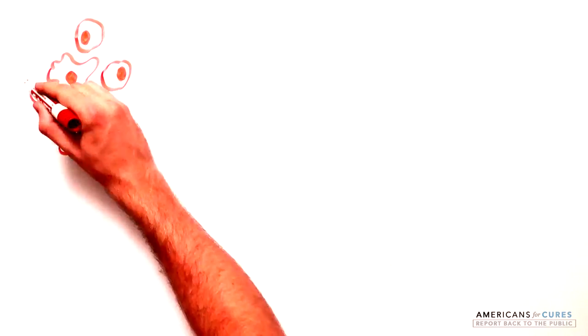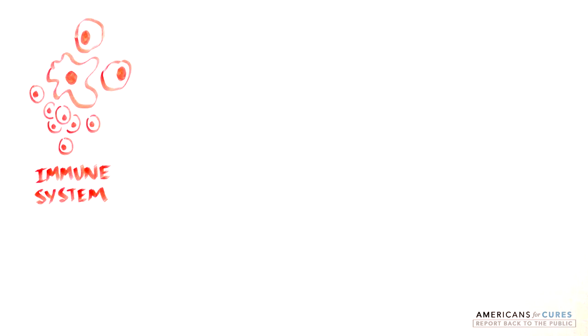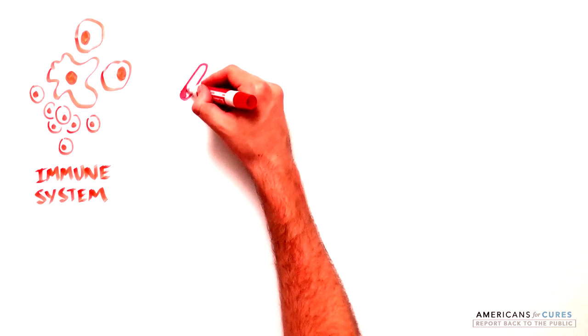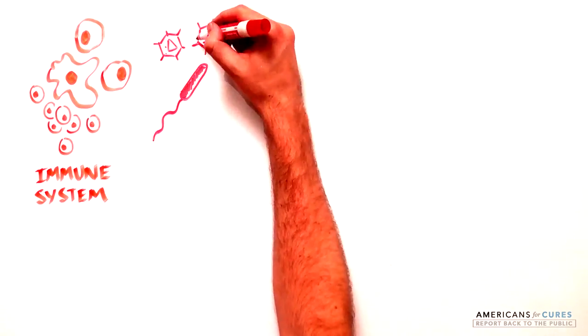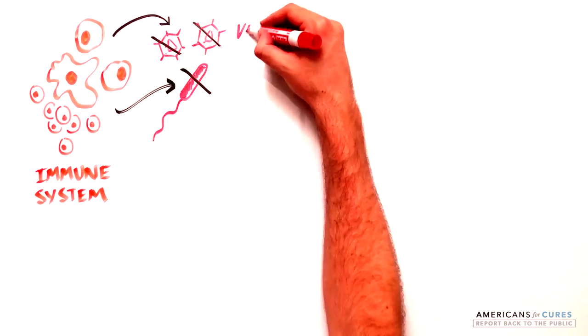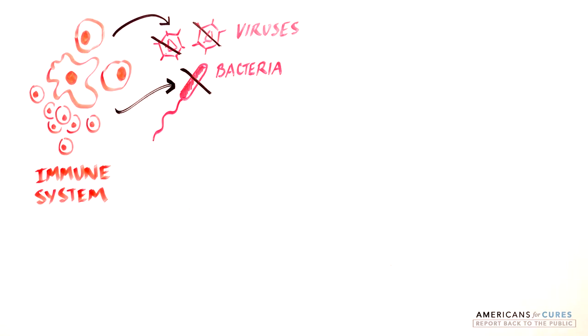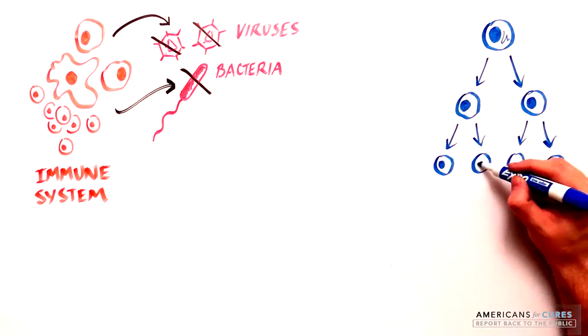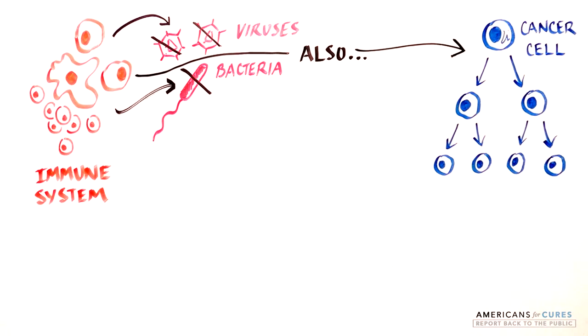Part of the answer involves the immune system. When we think of the immune system, we think of its role in keeping us healthy and killing disease-causing pathogens that enter our body, such as bacteria or viruses. But the immune system is also in charge of killing any cell that may start to misbehave in an attempt to prevent cancer.